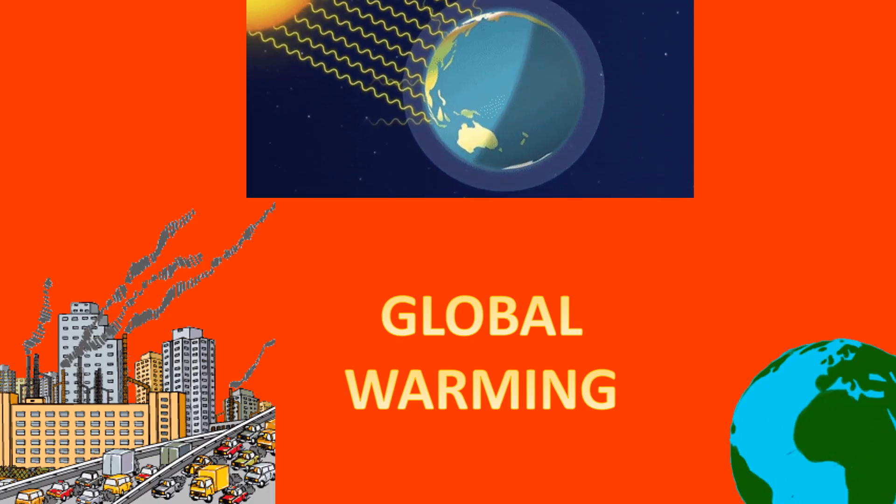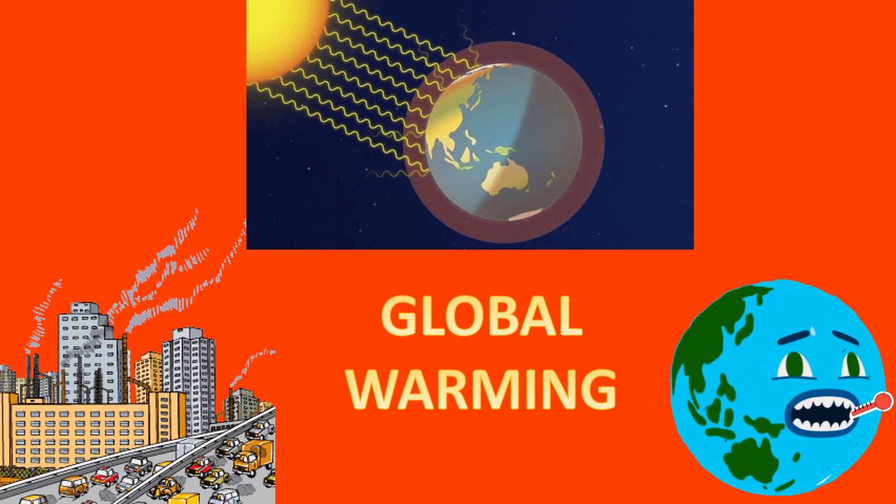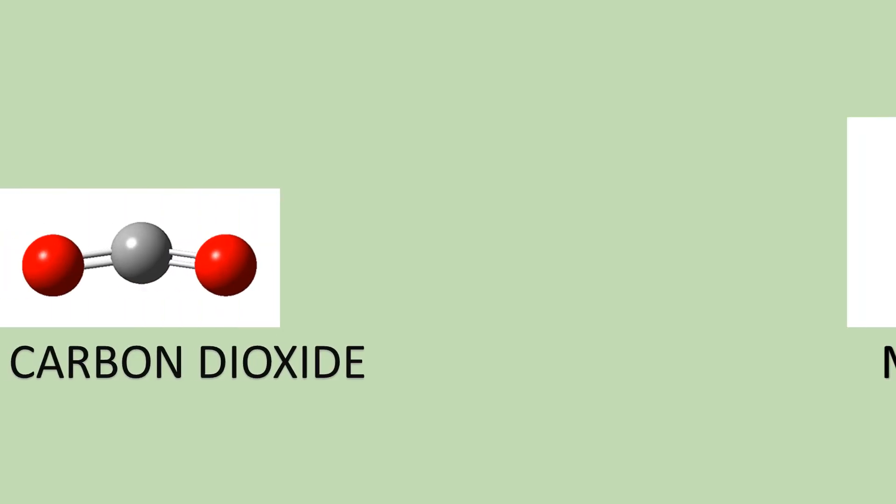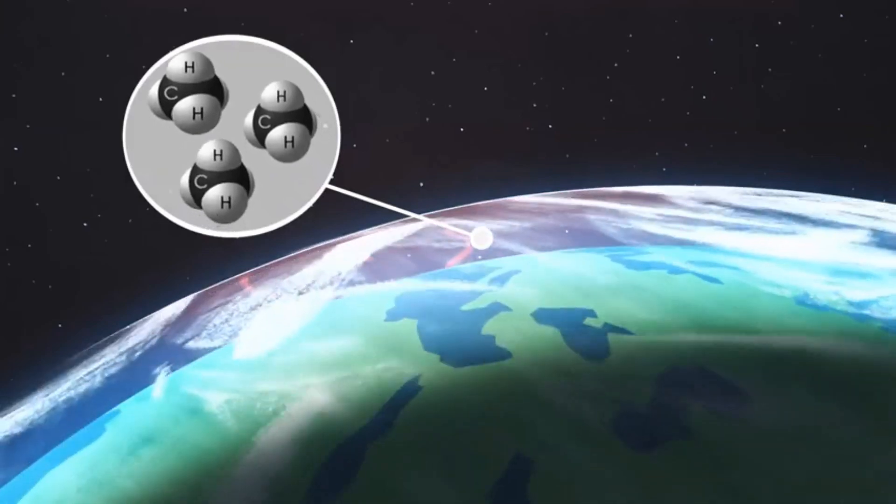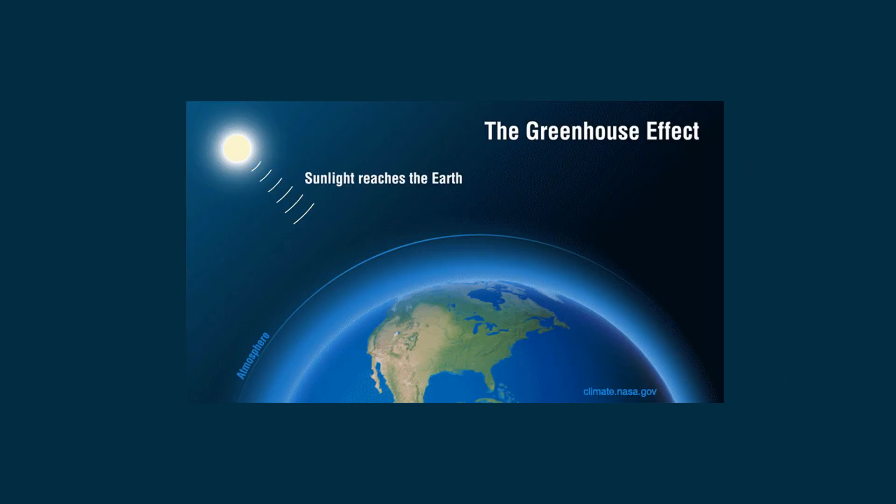As we all know, global warming is a very important problem that must be solved in the future. Carbon dioxide and methane are the most primary greenhouse gases. Methane is one of the trace gases in the atmosphere that is considered to play a major role in what is called the greenhouse effect.